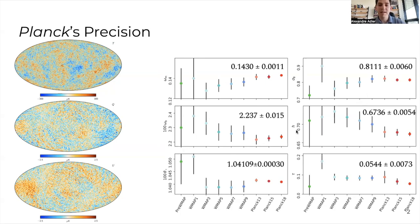There are six parameters in lambda CDM, and Planck got them all to within a percent, except tau, the optical depth to ionization, which is still only constrained to the 10% level.